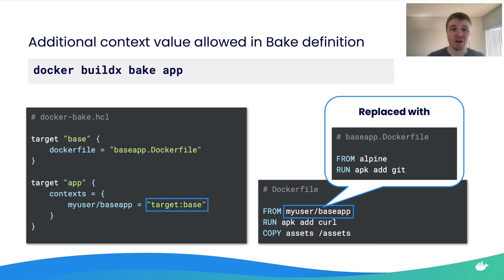This lets you create pipelines where completely independent Dockerfiles build as part of a single build command. Previously, you would have needed a staging registry — build the first image, push it, then pull it down — which was messy. This also works with multi-platform images and build clusters running on multiple machines.